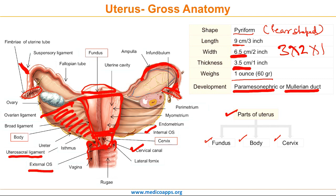Beside these, there are three layers of the uterus: the endometrium, the myometrium, and the perimetrium. We will discuss about these layers in detail in a separate video lecture.